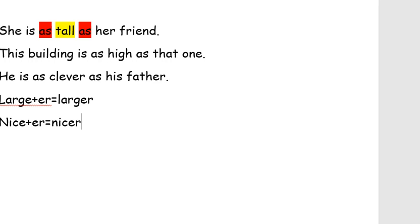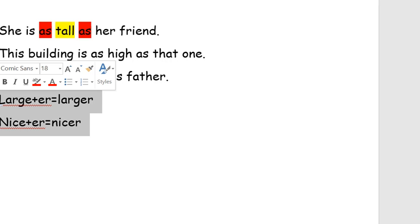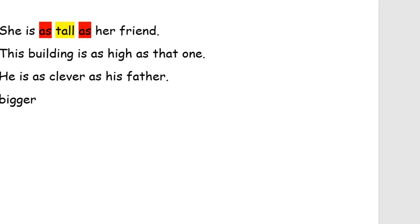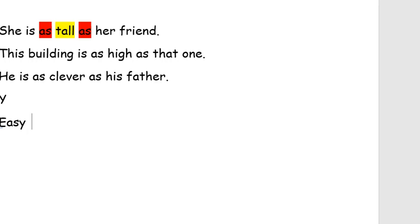Tək hecalı sifətlərdə qısa saitdən sonrakı samit qoşalaşır: big → bigger, hot → hotter. Sonu -y hərfi ilə bitən sifətlərdə -y-dən əvvəl samit gələndə -y çevrilir -i-yə, sonra -er şəkilçisi əlavə olunur. Çox hecalı sifətlərin müqayisə dərəcəsi onların qarşısından 'more' sözü artırmaqla düzəlir, üstünlük dərəcəsi isə sifətlərin qarşısından 'the most' sözü əlavə etməklə düzəlir.